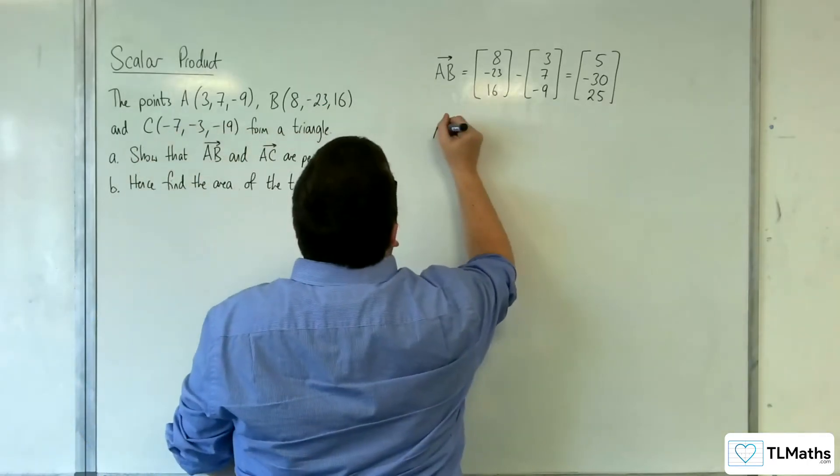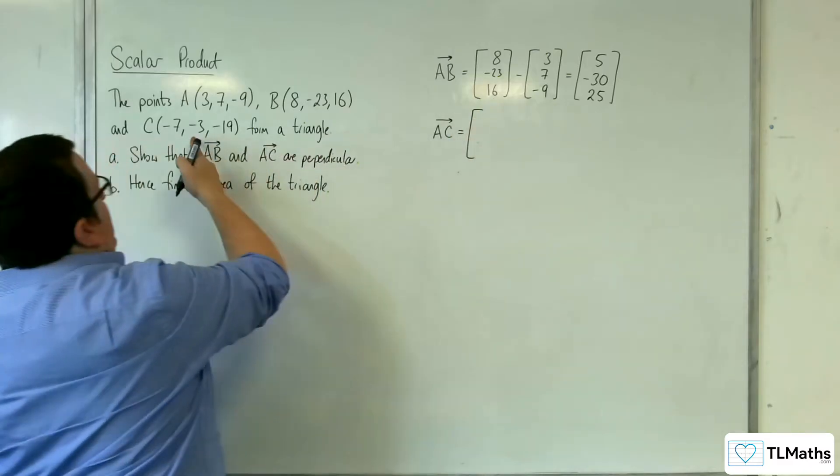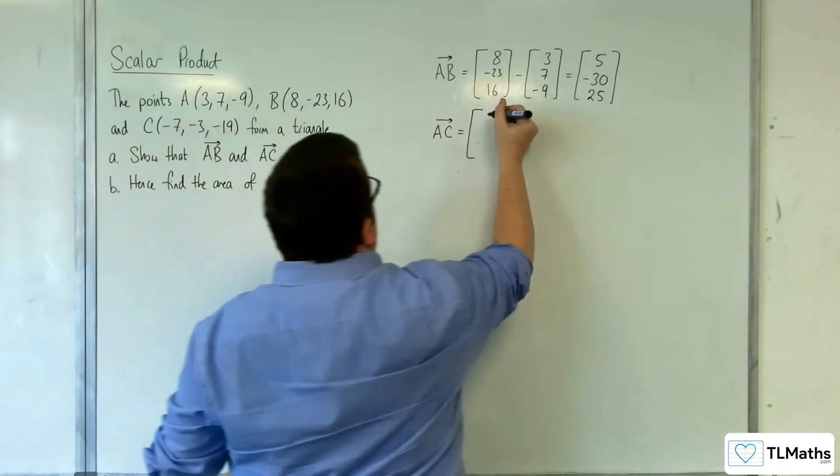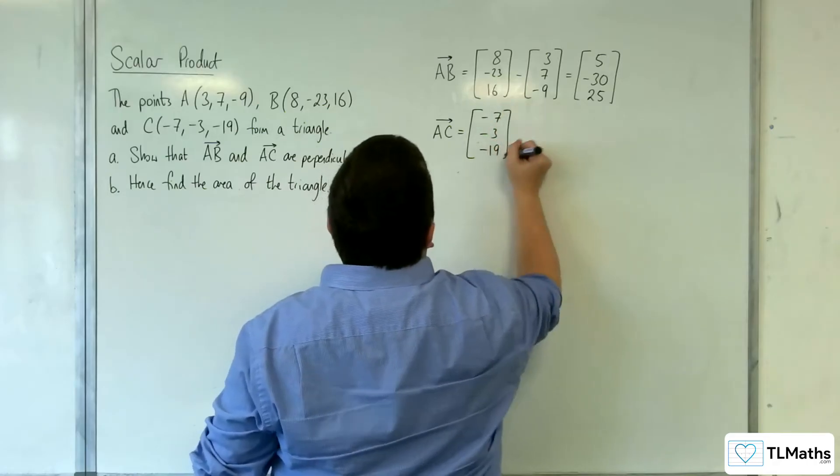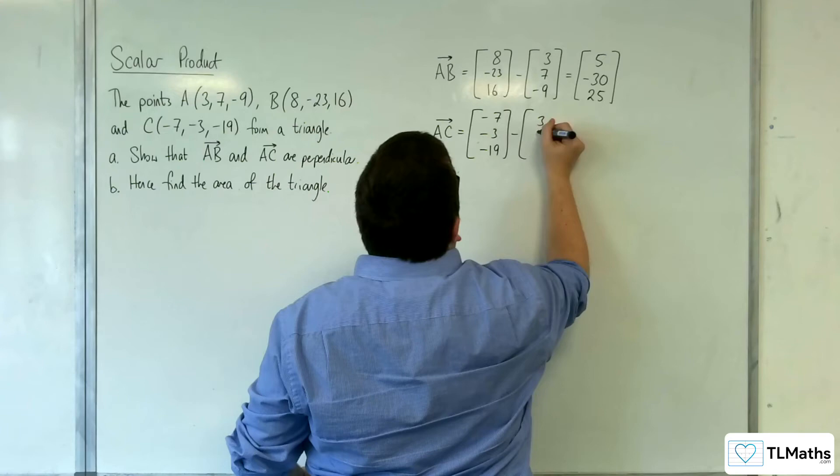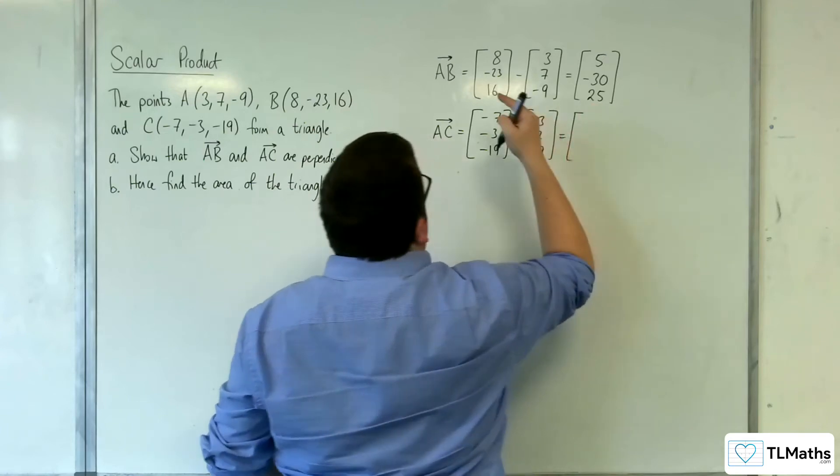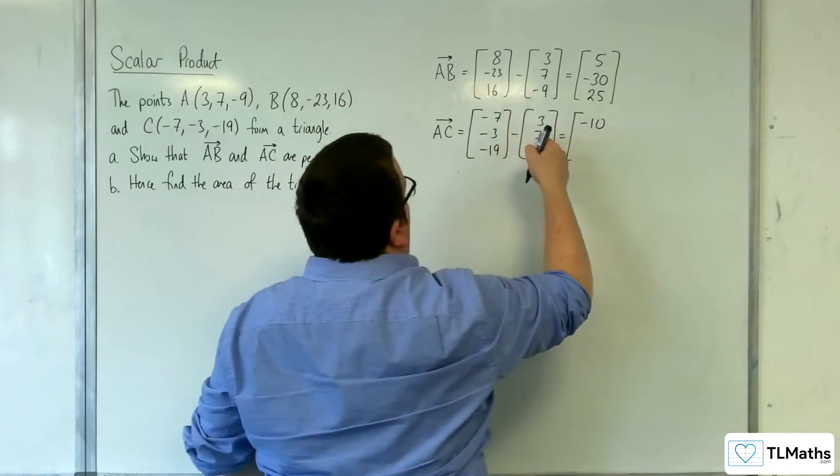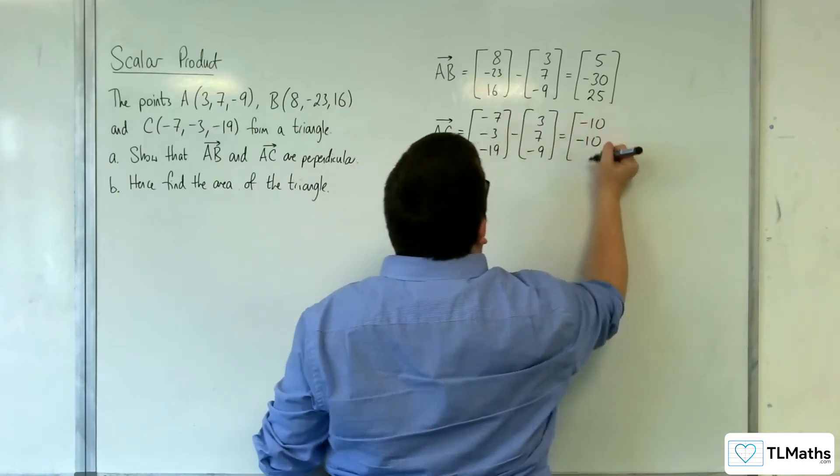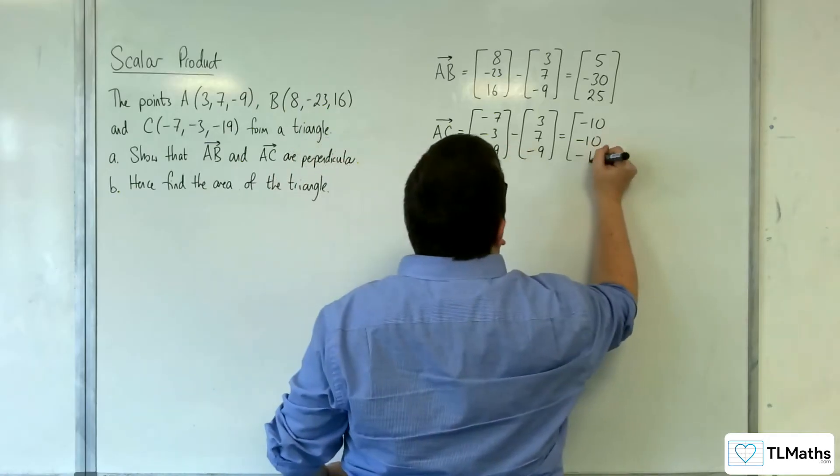Then we want AC, so that will be OC minus OA. So minus 7, minus 3, minus 19, take away 3, 7 minus 9. So minus 7 take away 3 is minus 10. Minus 3 take away 7 is minus 10. Minus 19 take away minus 9 is minus 10.